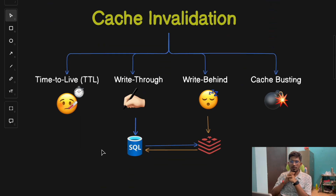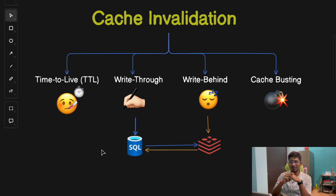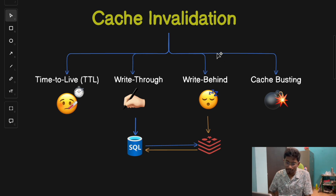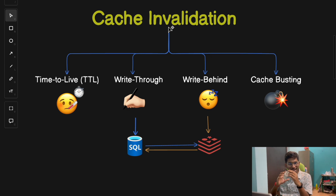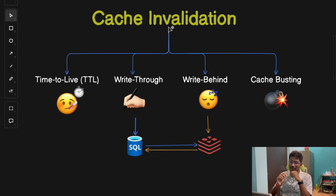Now I know what caching is and the different types of caches, but there's an essential part of caching that is not always discussed: cache invalidation. Cache invalidation is the process of removing or updating data that has become outdated or stale. Imagine a scenario where a user updates their profile picture — if the cache still has the older image, you will still be seeing the older image. That's where cache invalidation comes into picture.